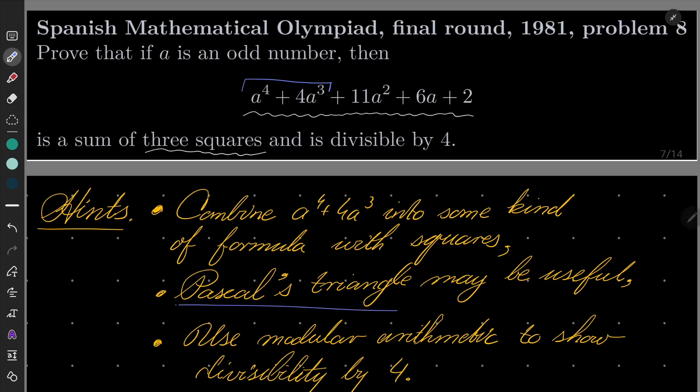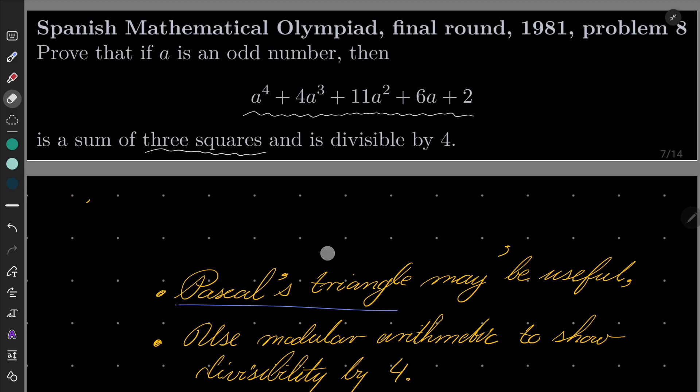It's somewhat connected to the binomial theorem. And finally, when you have simplified or dealt with the first part of the problem by showing divisibility by 4, just use modular arithmetic. So consider this number modulo 4. Give this problem a try and I will see you in a minute.